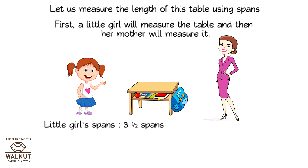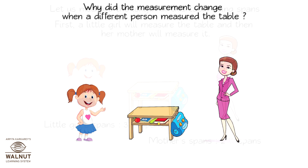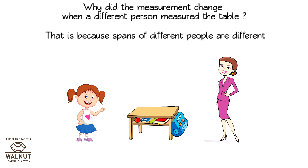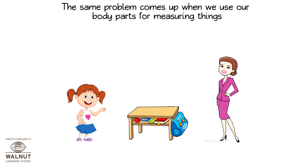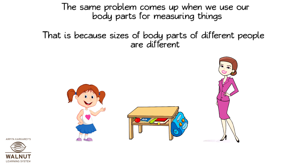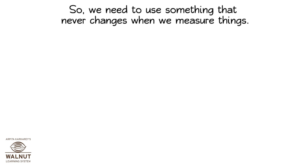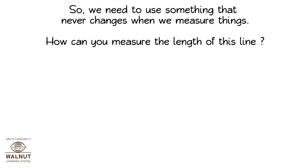The little girl's span is three and a half spans. The mother's span is two and one-fourth spans. Why did the measurement change when a different person measured the table? That is because spans of different people are different. The same problem comes up when we use our body parts for measuring things, because sizes of body parts of different people are different. So we need to use something that never changes when we measure things.